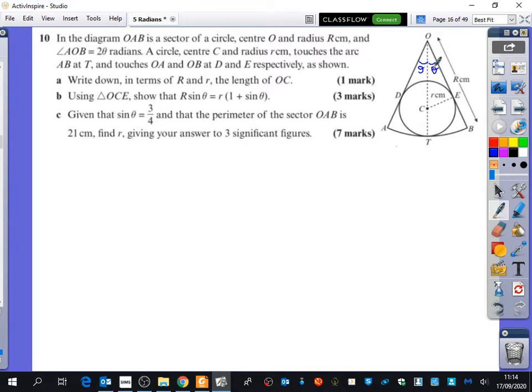A circle centre C and radius r touches the arc AB at T, and touches OA and OB at D and E, respectively, as shown. So basically, the only thing that wasn't on the diagram was the angles that we had here. Everything else was already included.